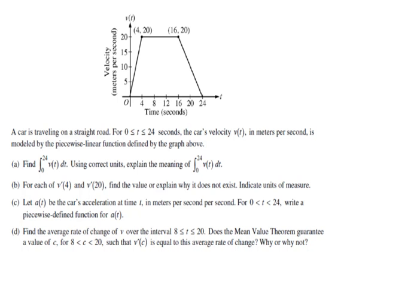With this first problem, we have a velocity graph where velocity is measured in meters per second. There's a car traveling on a straight road from 0 to 24 seconds, and the velocity is modeled by the piecewise linear function defined by the graph above.